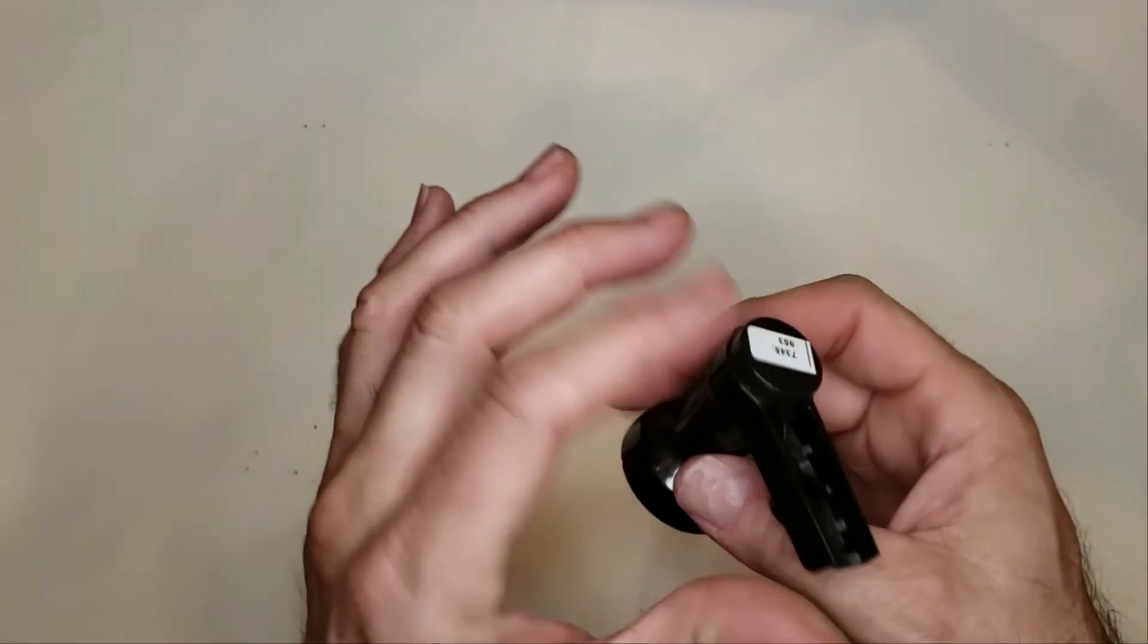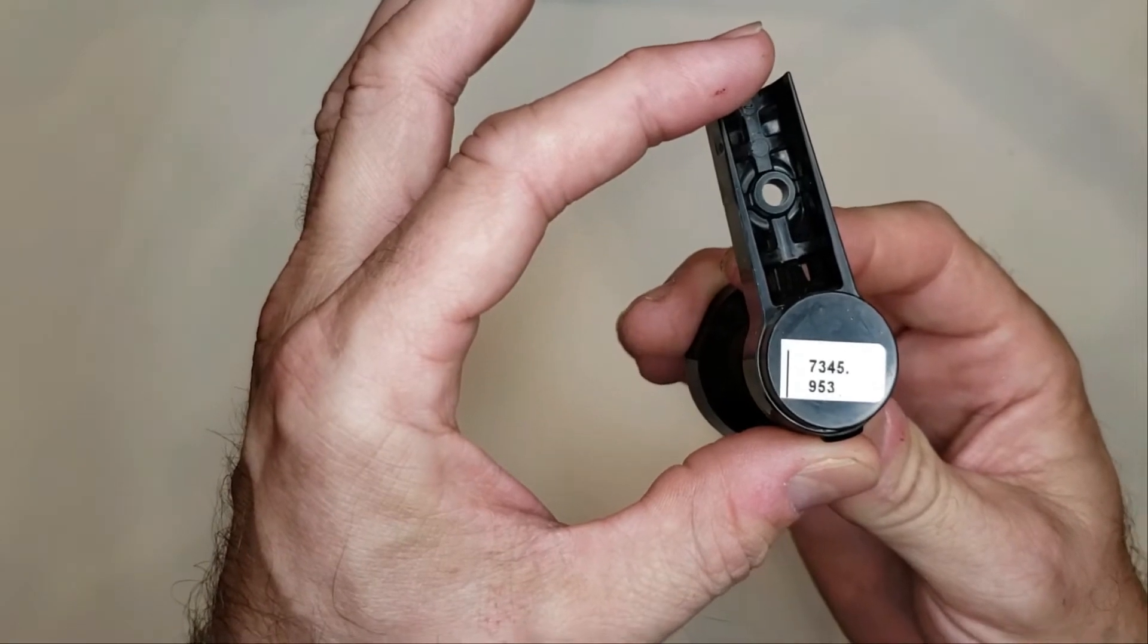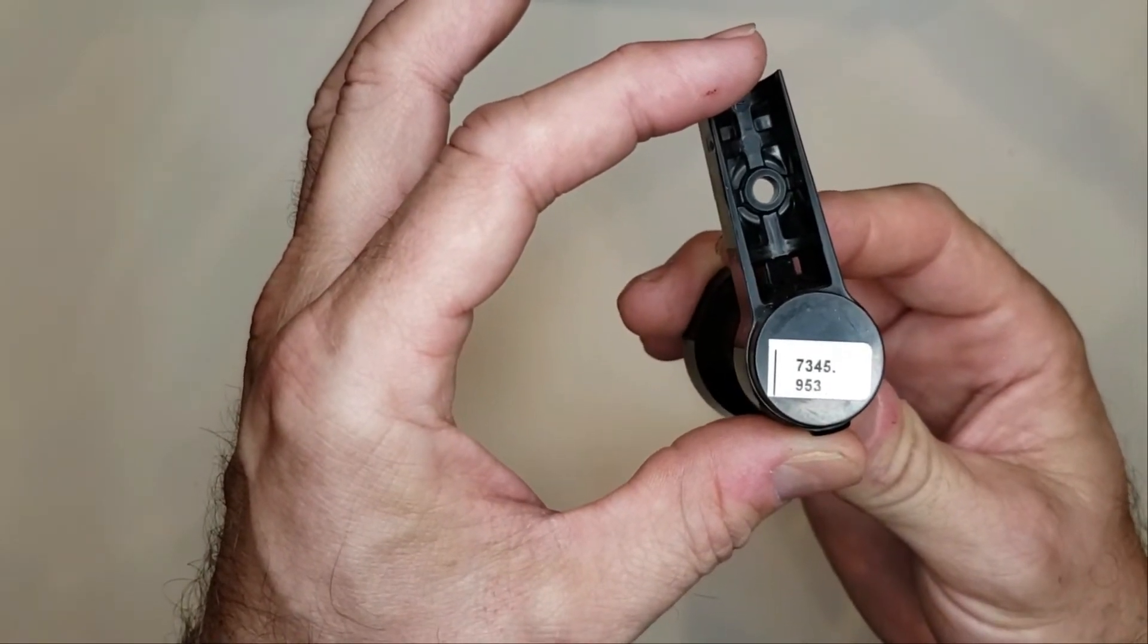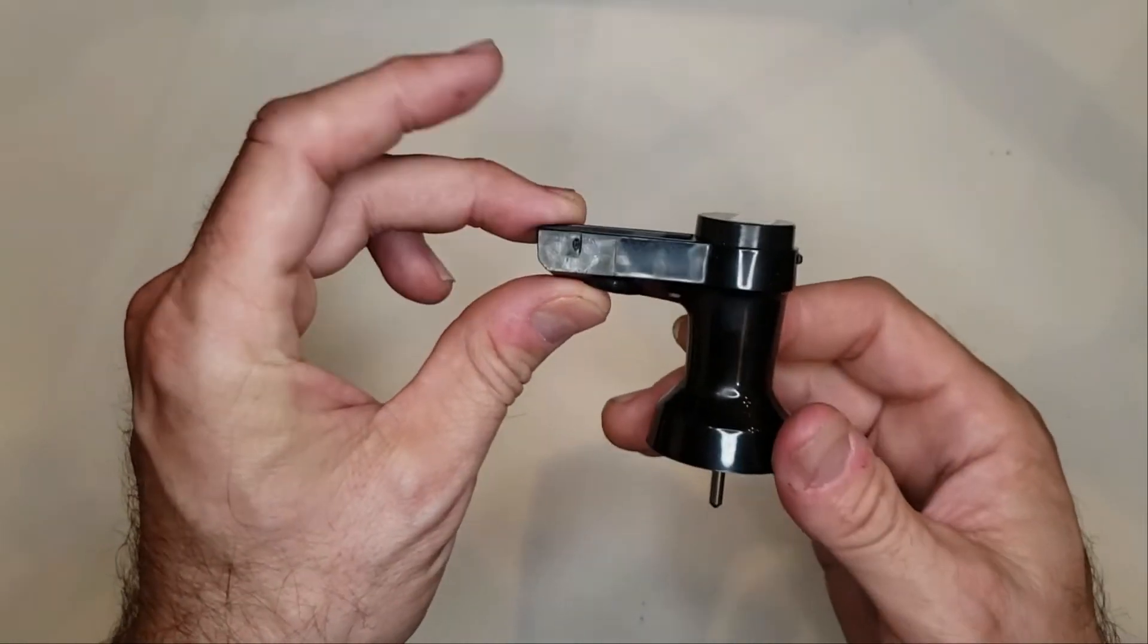This is a wind speed cartridge. It is model number 7345.953. This wind speed cartridge will not fit all Davis anemometers.